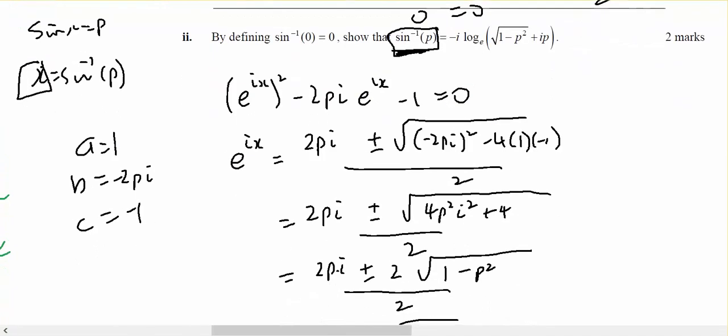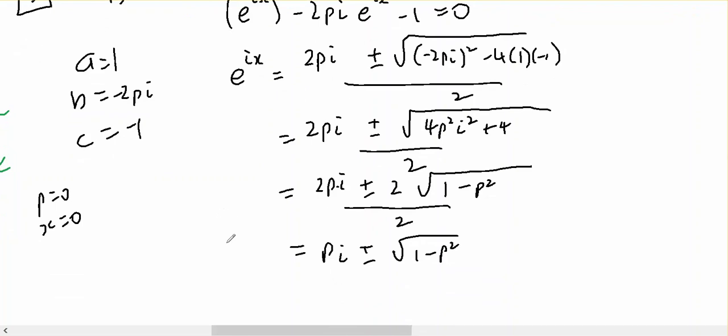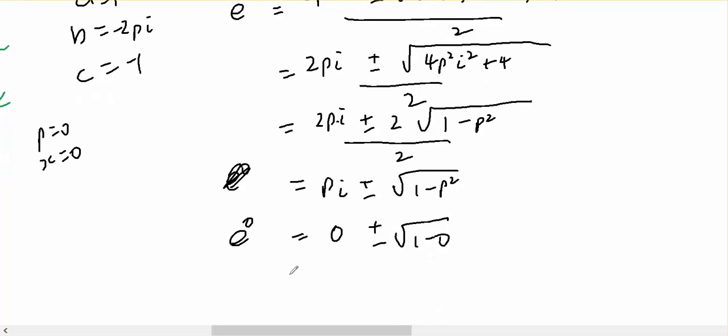Now I know that p equals 0 when x equals 0. And e to the 0 equals 0 plus or minus square root of 1 minus 0. Therefore, for 1 to equal 1, I need the positive square root, not the negative square root.